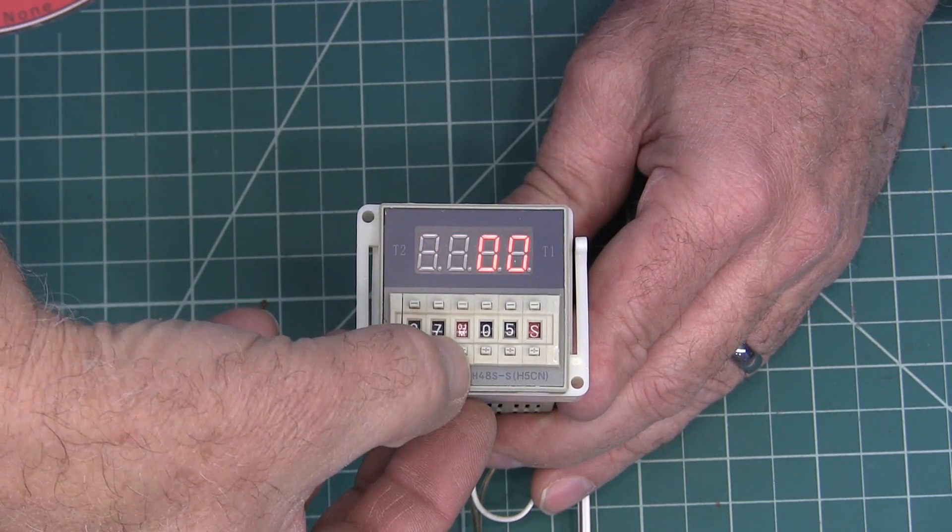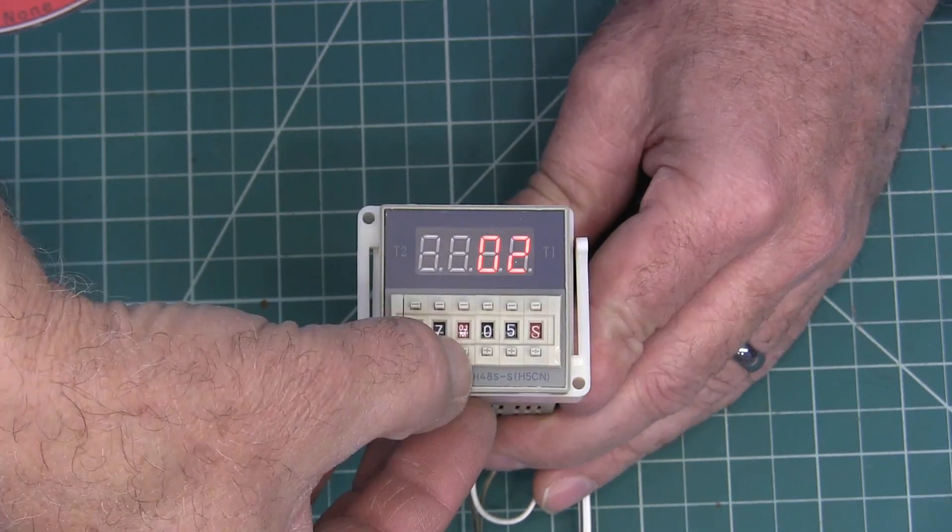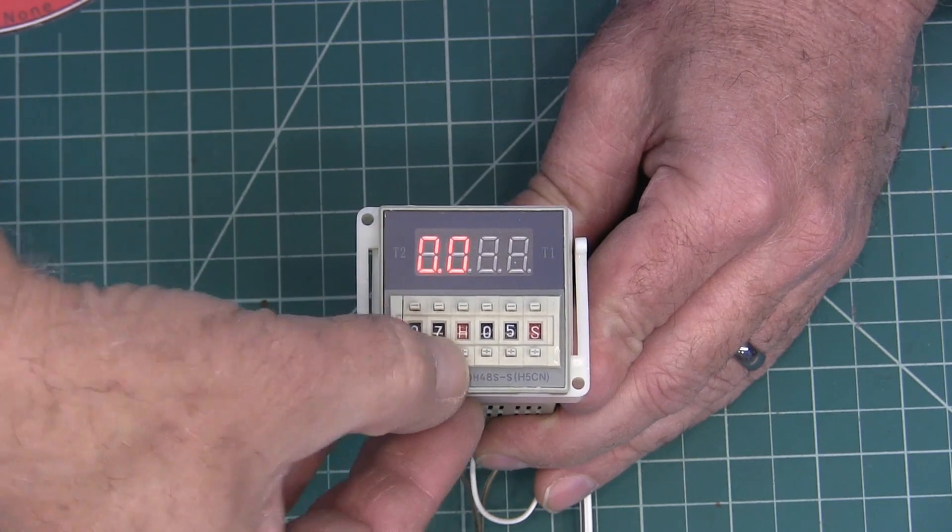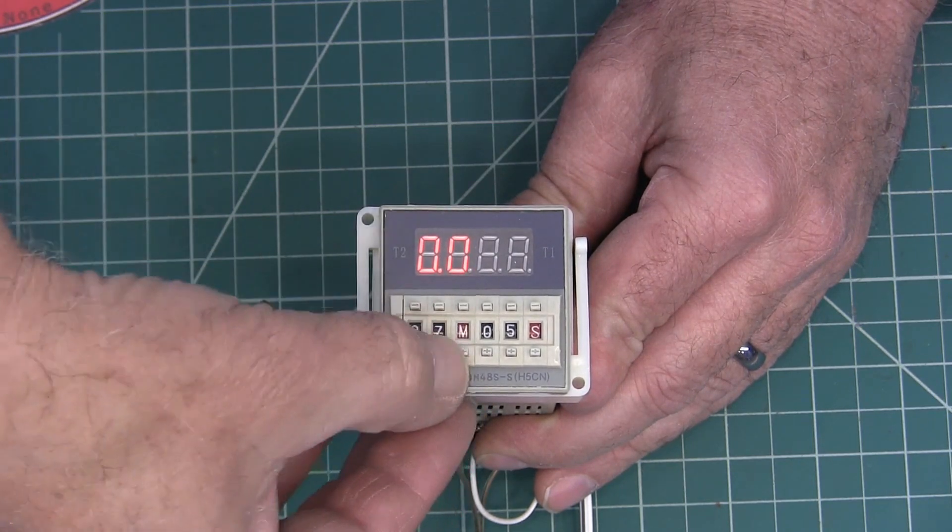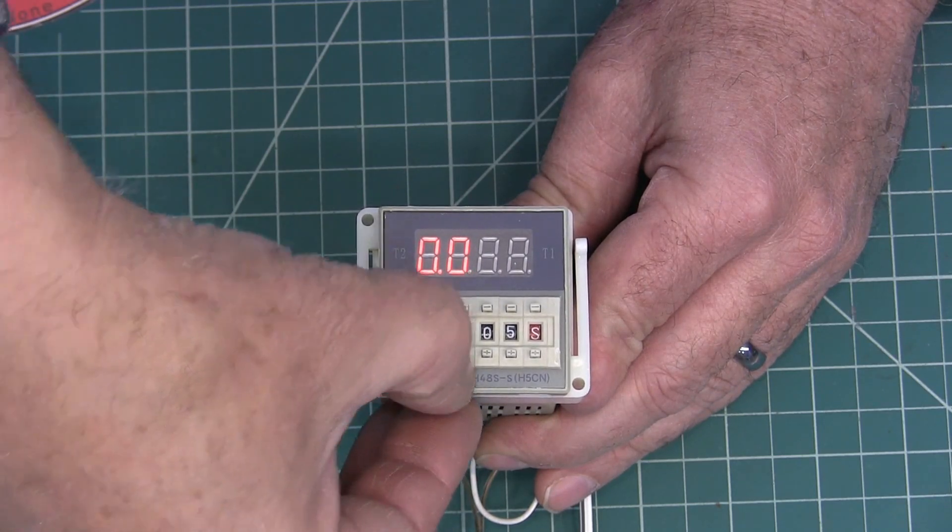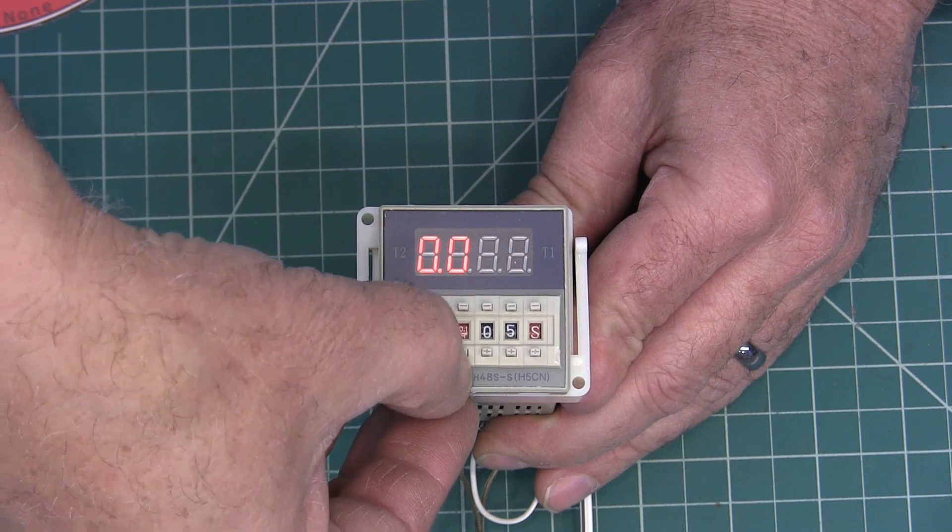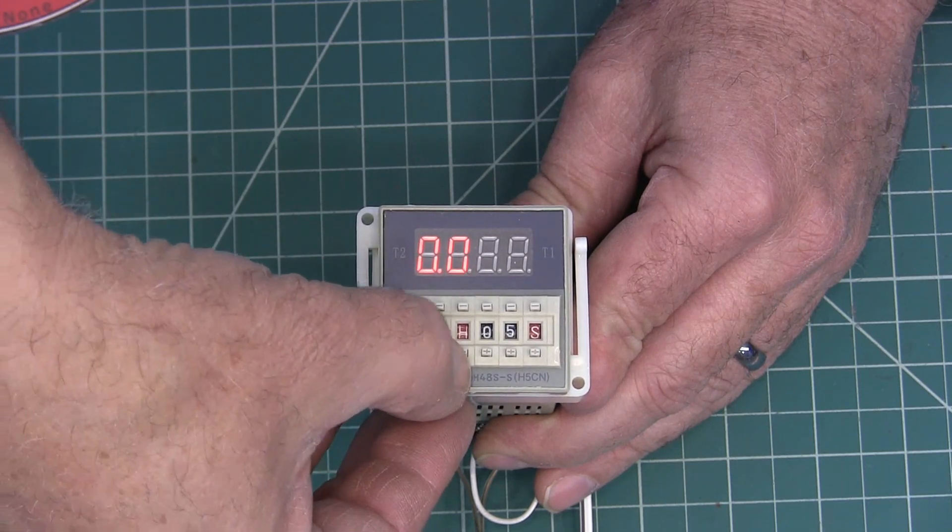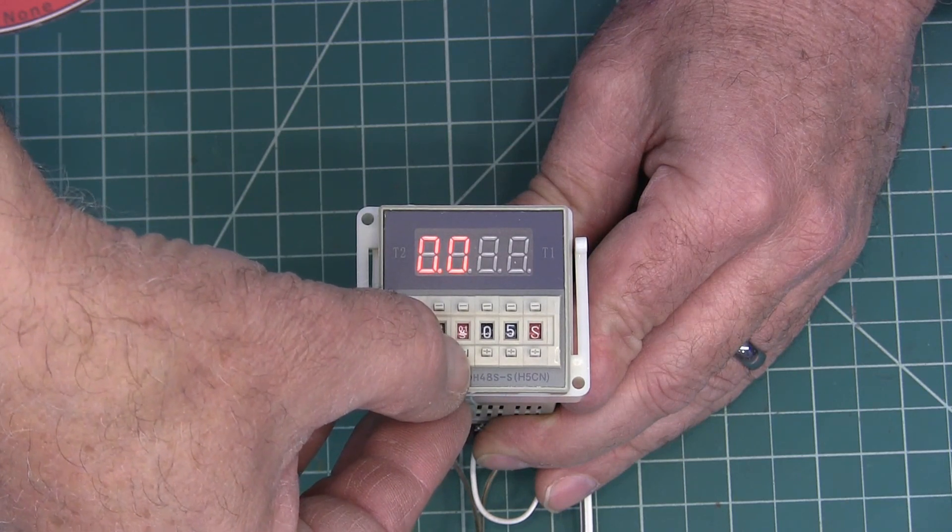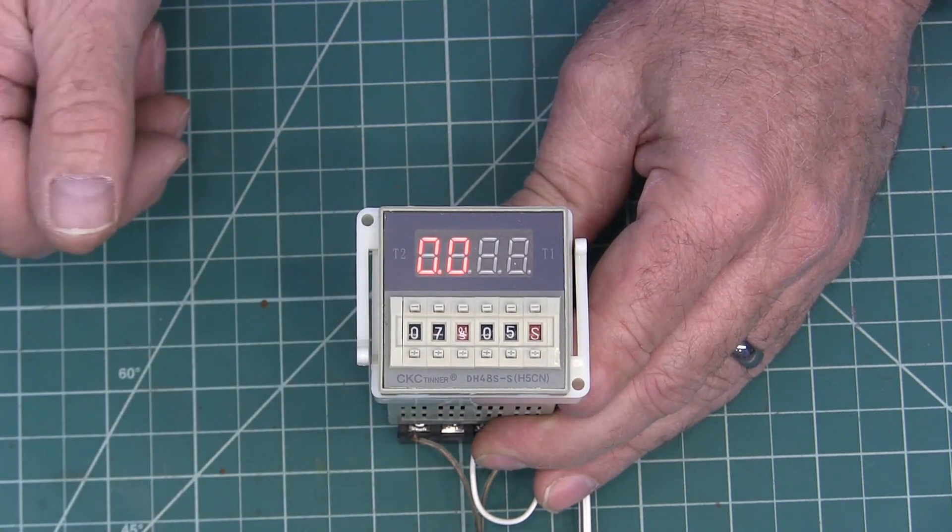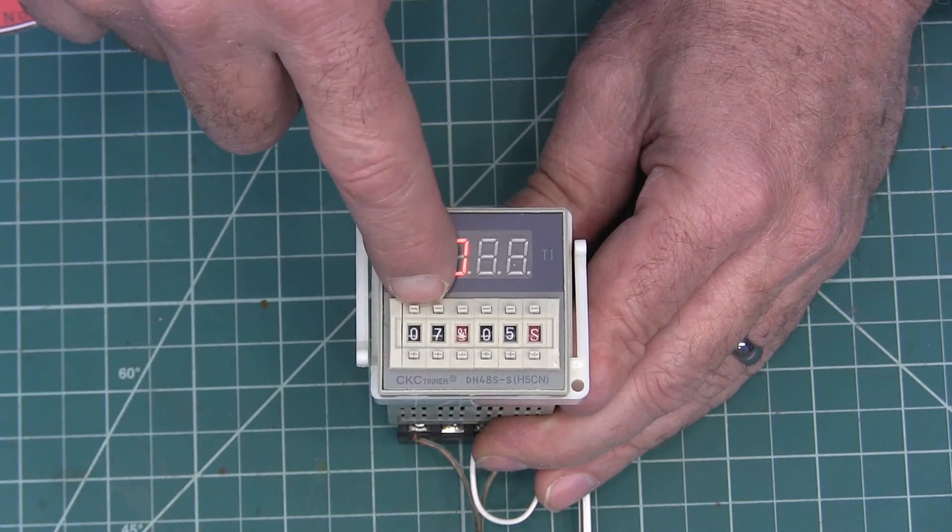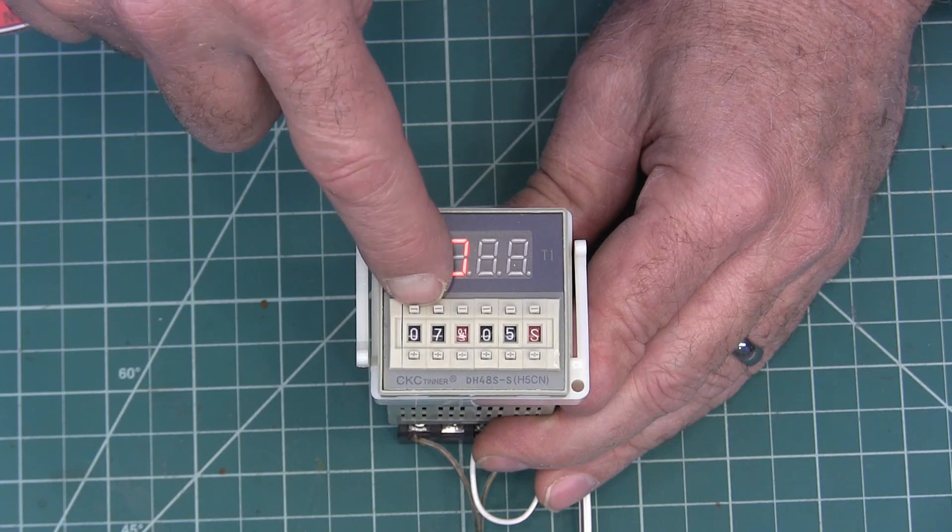It counts the number of seconds that you have set here. It'll do seconds, tenths of a second, minutes, tenths of a minute, hours, and tenths of an hour. You've got two digits there, so the maximum will be 99 hours and the minimum would be one tenth of a second.